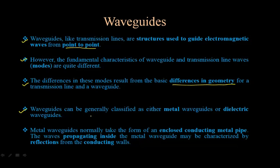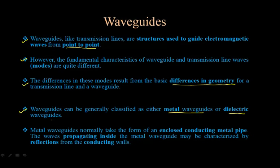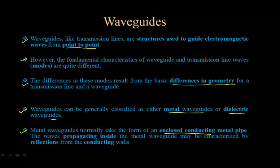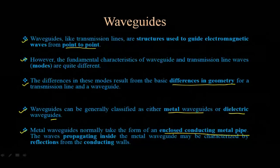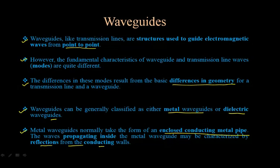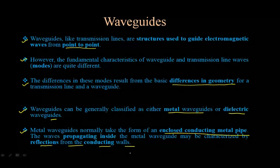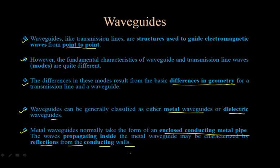Waveguides can generally be classified as either metal waveguides or dielectric waveguides. Metal waveguides normally take the form of enclosed conducting metal pipes, as shown previously. The waves propagating inside the metal waveguide are characterized by reflections from the conducting walls — total internal reflection — which carries the wave from one point to another.